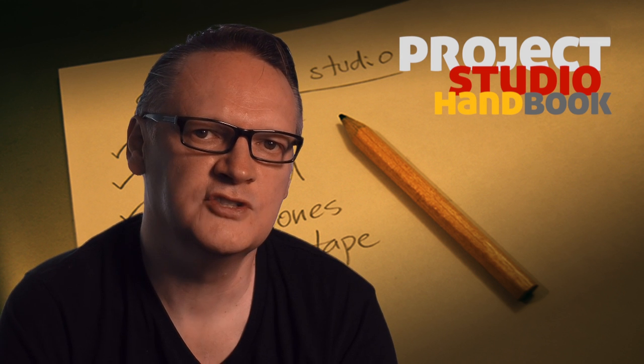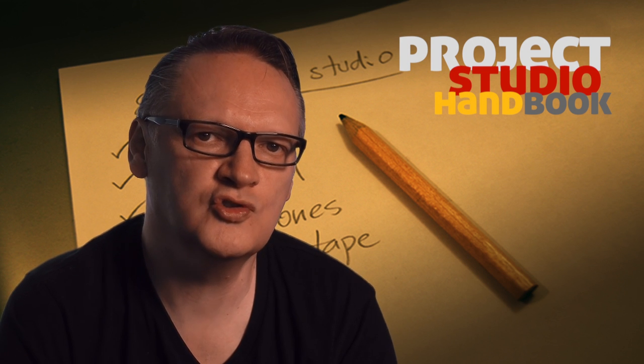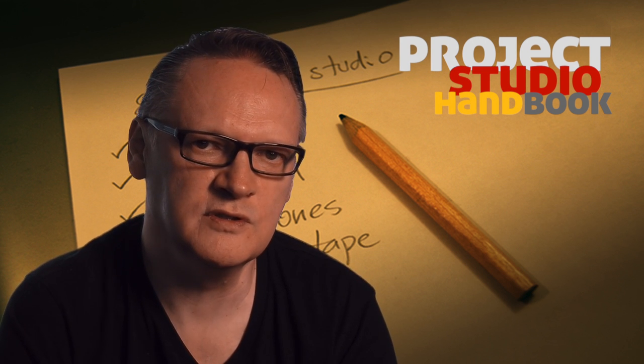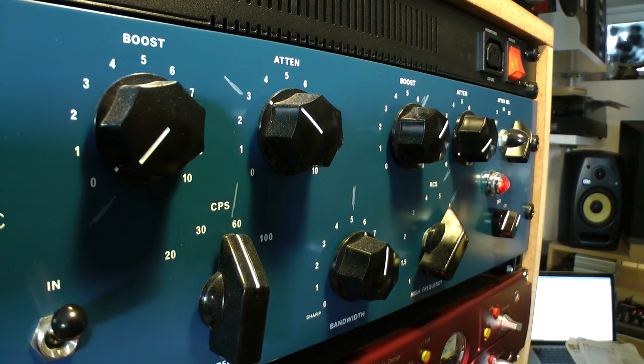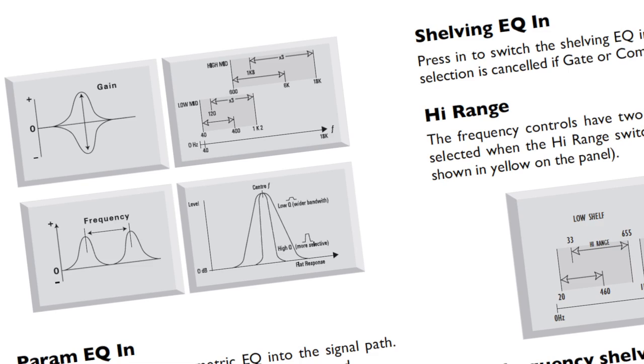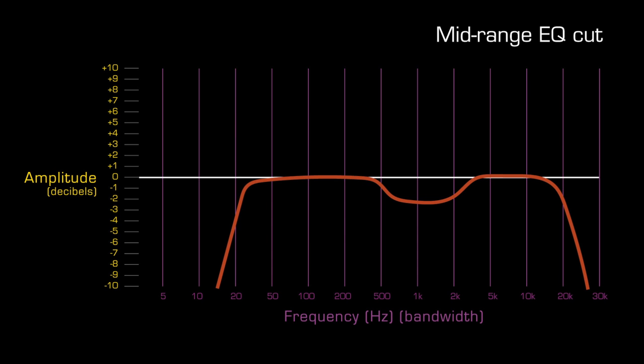Some devices, such as equalisers, are designed to allow a user to control the frequency response by setting the amount of cut and boost that a filter will apply. In this case, the device's manual will show the range of changes that can be applied. This example shows the range of frequencies and the amount of cut and boost available from an equaliser's mid-range filter. This example shows a sound that has been EQ'd to reduce its mid-range frequencies.